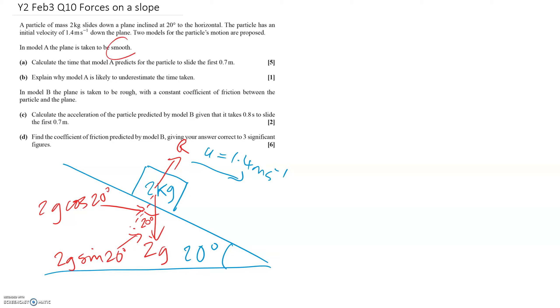And it says it's smooth, so there's no friction and it doesn't say anything about air resistance or resistive forces. So those are the only forces acting on this particle. We've got to calculate the time it takes to slide 0.7 meters. We're going to need to use a SUVAT rule, but first we need to calculate the acceleration using F equals ma.